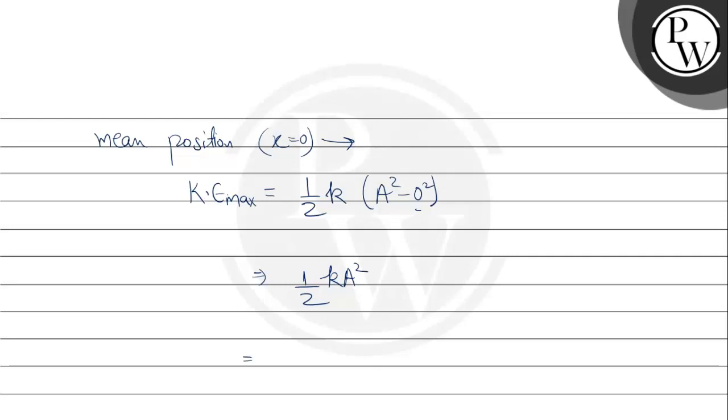Putting in the values, you will get half times k value 6 × 10⁵, and a value is 4 cm, that means 4 by 100 meter.